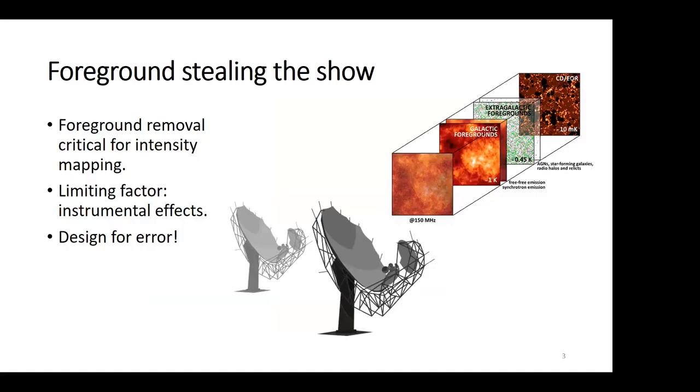This endeavor, however, is not without challenges. The foreground is several magnitudes larger than the 21 centimeter signal. What makes it possible to remove this foreground is because the foreground varies smoothly over the frequency and remains correlated, while the 21 centimeter signal varies rapidly and decorrelates.